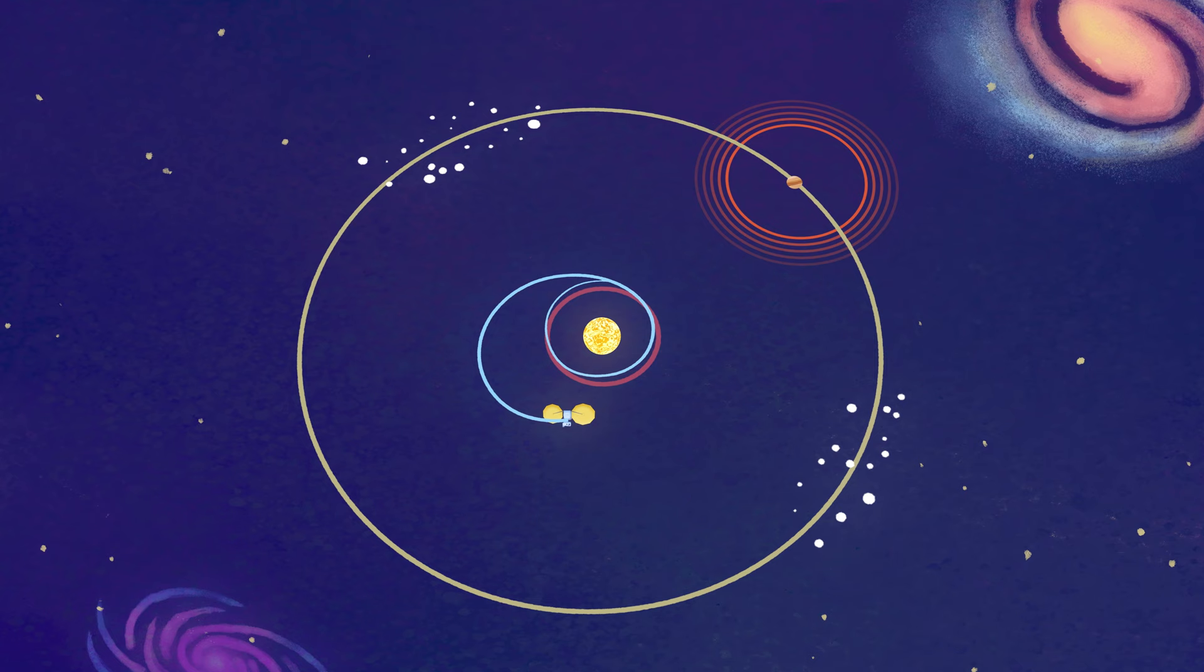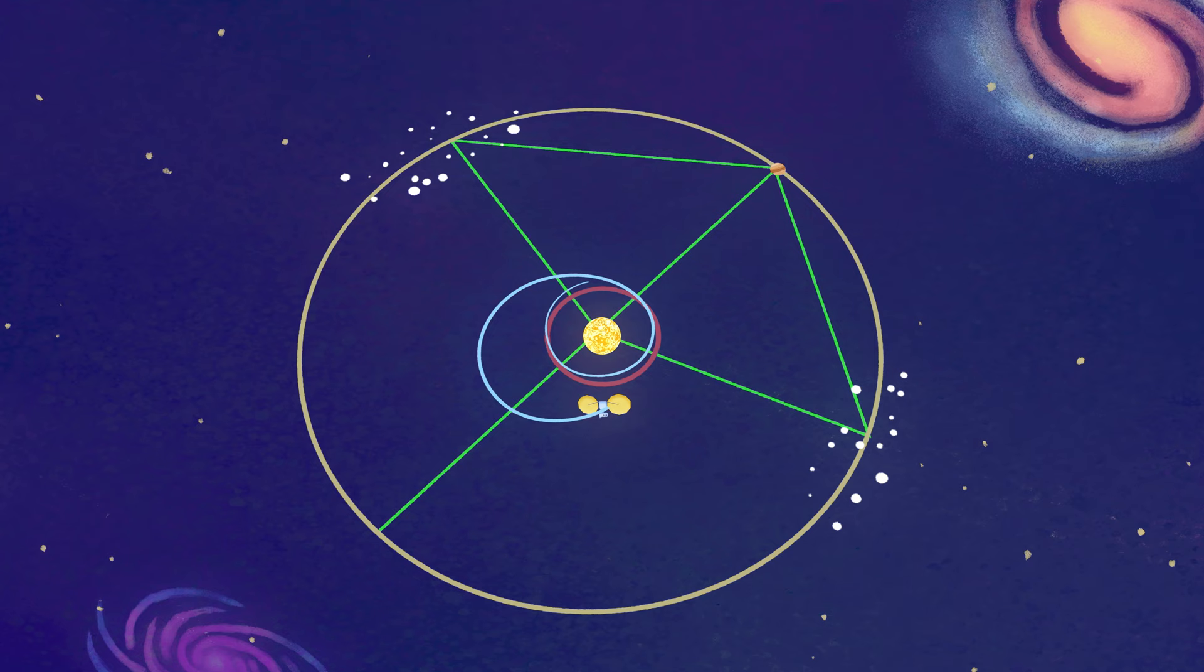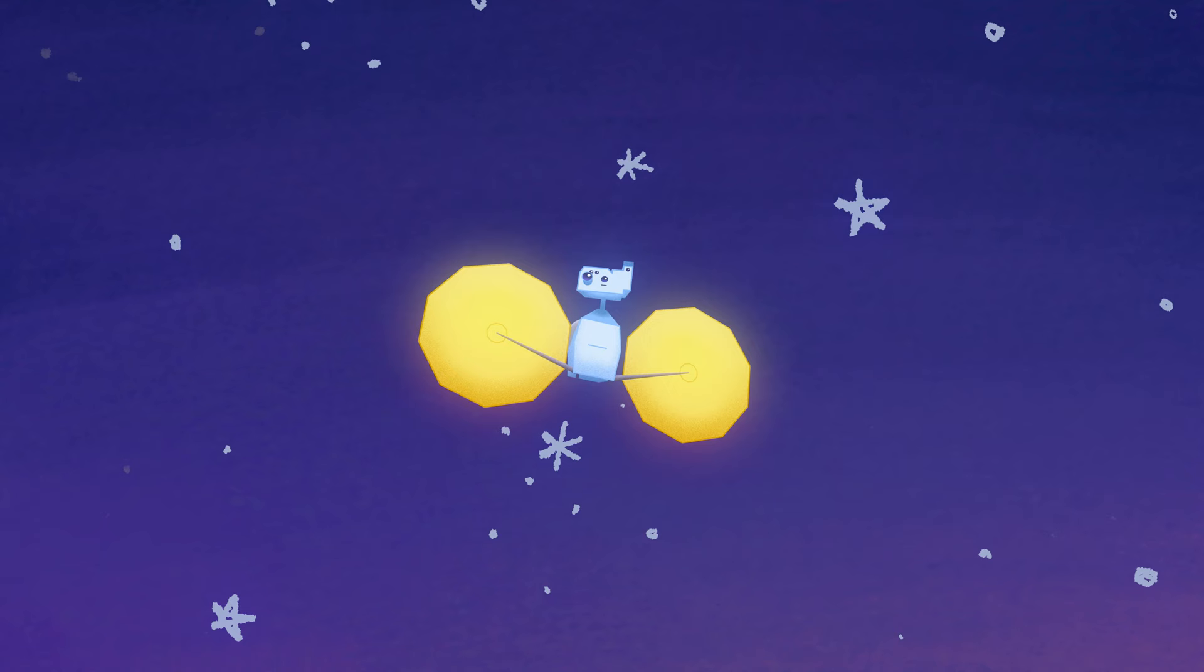The pull of gravity from the Sun balances the pull from Jupiter to keep the Trojan asteroids in these two groups. Due to the gravitational balancing act, these asteroids have been in these orbits for billions of years.